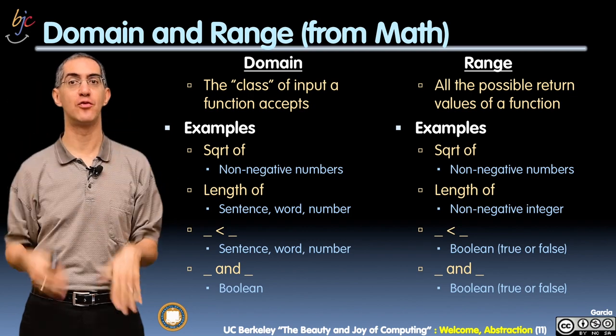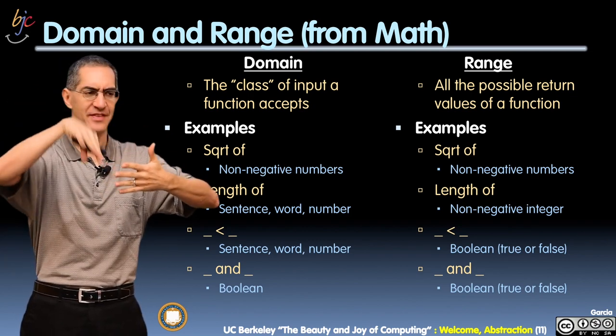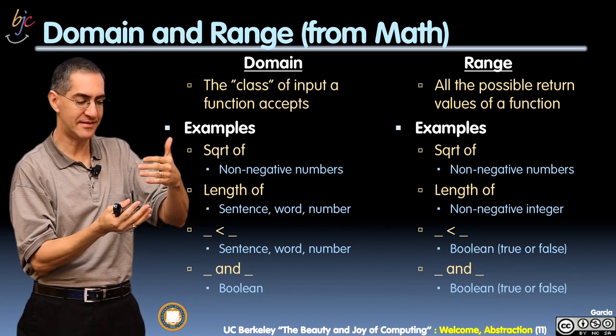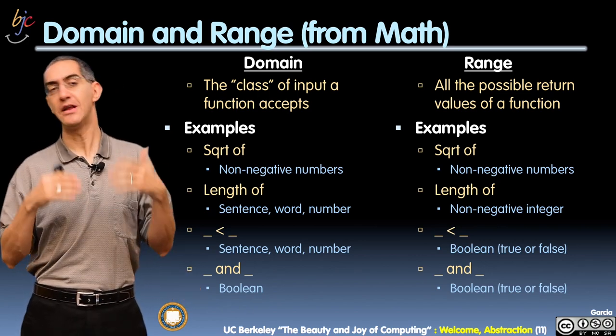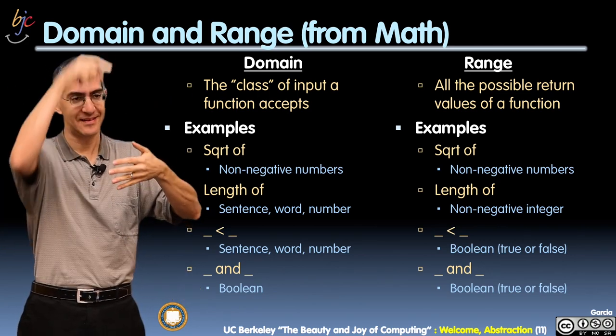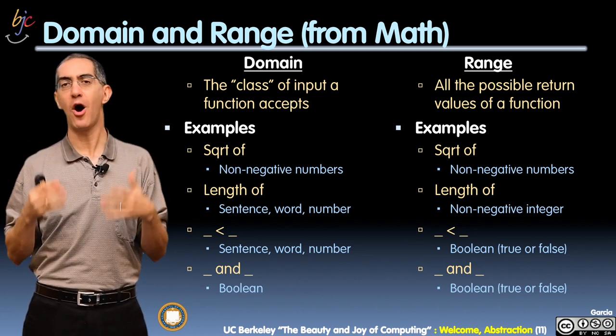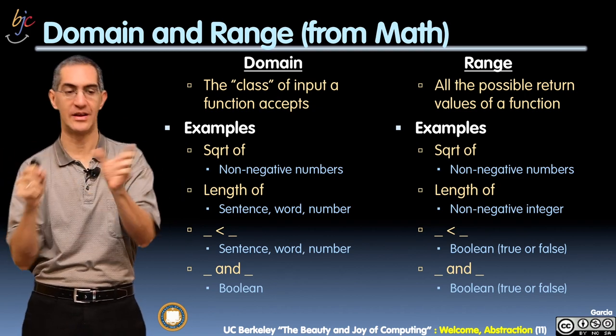Functions have domain and range. Domain is the characterization, the class of inputs that a function takes. The range is the kind of output that the function emits. You can memorize that with a mnemonic: D and R, domain and range. We often think of a contract with a function saying, what's your domain, what's your range? And that kind of defines the plugs you have.